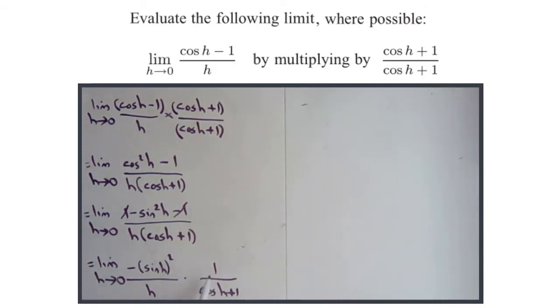This bit here is not going to be an issue because this cos h plus 1 is just going to be 2, so this whole bit is just going to be a half, so I don't need to worry about that. I could even, if I wanted to, just pull that out as a half now. Right, so how do I wrestle this into a situation of the fundamental trigonometric limit?